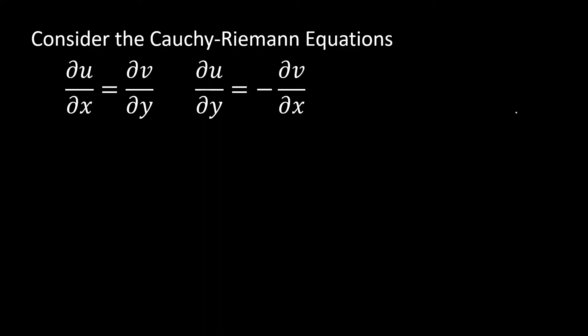Let's consider our Cauchy-Riemann equations. We know that in complex analysis, these Cauchy-Riemann equations are incredibly important. And what we're going to do is we're going to differentiate these with respect to x and y respectively. So we're going to get four equations out by the time we're done with this.